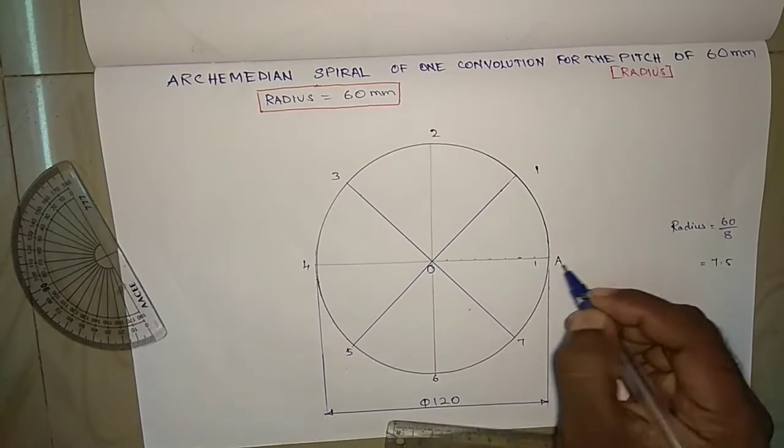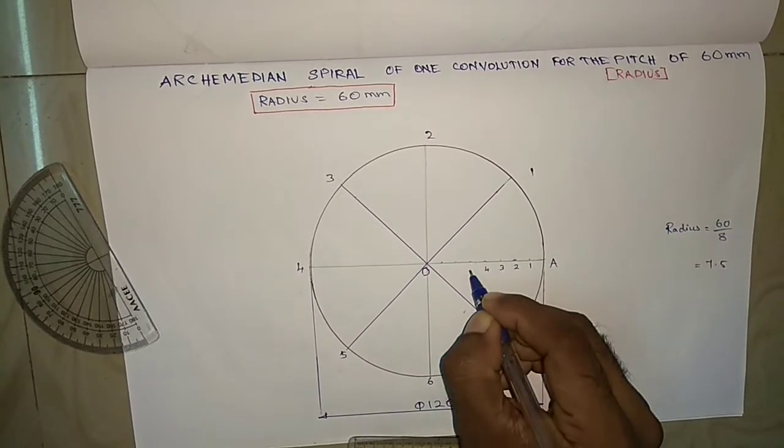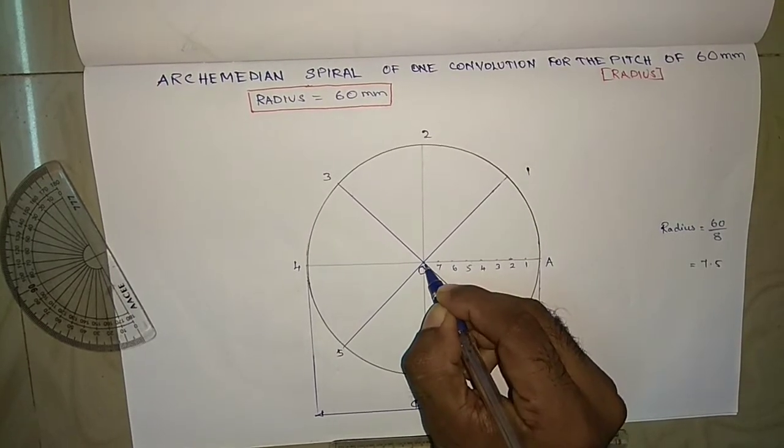Then name them 1, 2, 3, 4, 5, 6, 7. 8 is the center point.